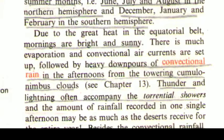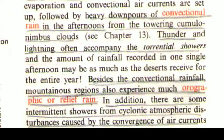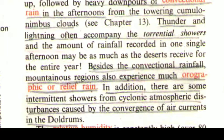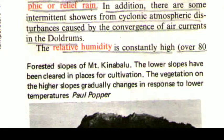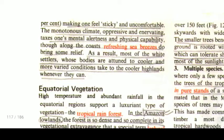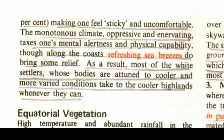Due to the great heat in the equatorial belt, mornings are bright and sunny. There is much evaporation and convectional air currents are set up, followed by heavy downpours of convectional rain in the afternoons from the towering cumulonimbus clouds. Thunder and lightning often accompany the torrential showers, and the amount of rainfall recorded in one single afternoon may be as much as the deserts receive for the entire year. Besides convectional rainfall, montane regions also experience much orographic or relief rain. In addition, there are some intermittent showers from cyclonic atmospheric disturbances caused by the convergence of air currents in the doldrums. The relative humidity is constantly high, over 80 percent.